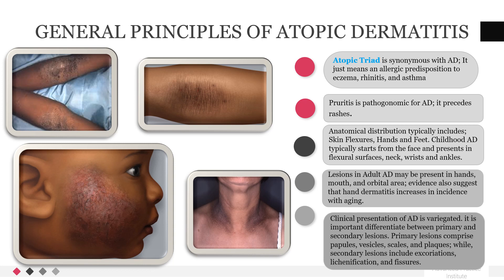Childhood AD typically starts from the face and presents in flexural surfaces, neck, wrists, and ankles. Lesions in adult AD may be present in hands, mouth, and orbital area. Evidence also suggests that hand dermatitis increases in incidence with aging. The clinical presentation of AD is variegated at best.